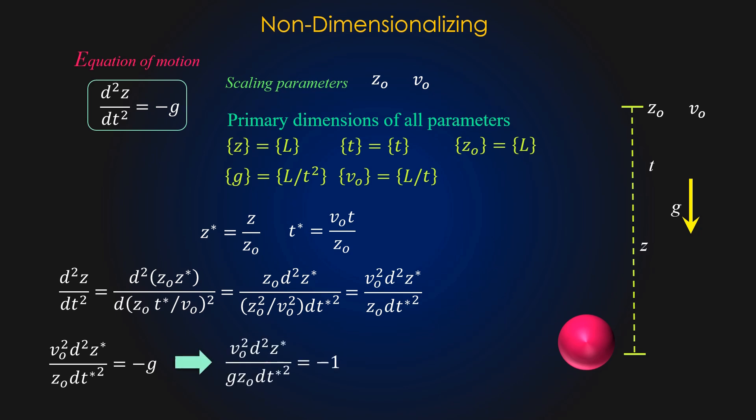The grouping of v0 squared by g z0 is the square of a well-known non-dimensional parameter called the Froude number, given as v0 by square root g z0. On substituting we get this form of final equation.